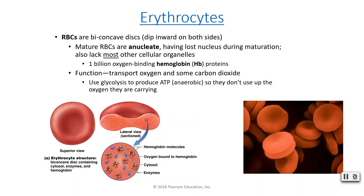Since red blood cells don't have most of the organelles we're familiar with, including mitochondria, they cannot do cellular respiration, but they still need energy. So instead, they will do glycolysis, which produces a little bit of ATP. This allows them to create ATP in an anaerobic way, meaning they don't use oxygen — so all the oxygen the red blood cells are carrying, they don't just use it all up to create their own ATP.